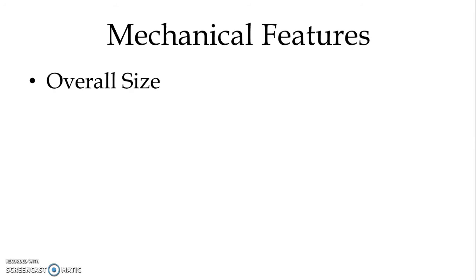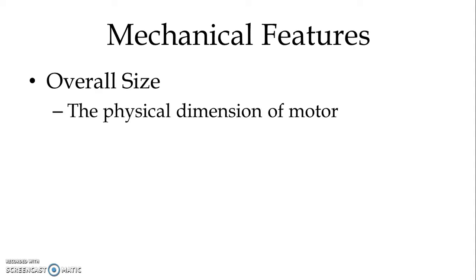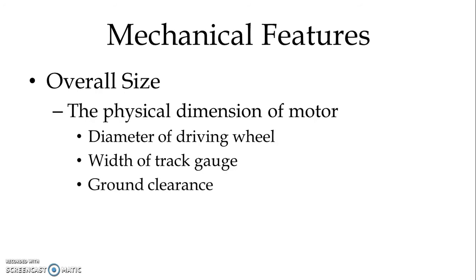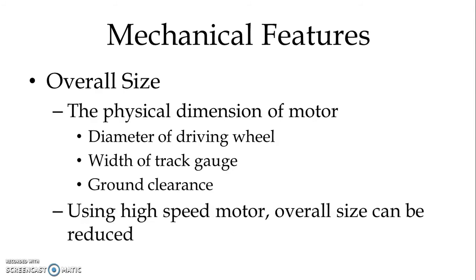Regarding overall size, the physical dimensions of the motor depend on the diameter of the driving wheel, width of the track gauge, ground clearance, etc. By using a high-speed motor, overall size can be reduced, and this should be done at the designing and manufacturing stage. By using very high-quality insulation, the size of the machine can also be reduced.